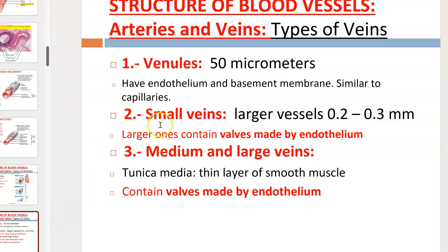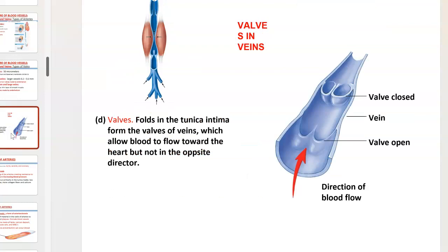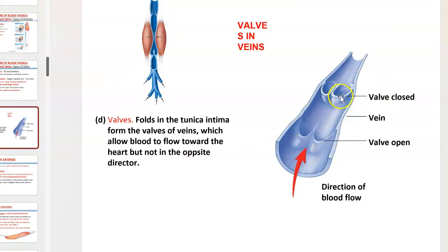Looking at the sizes of veins — medium, small veins, and venules — medium veins and some small veins have valves made by endothelium. The function of these valves is to prevent blood from back-flowing or going in the wrong direction, especially in areas subject to gravity such as the legs.